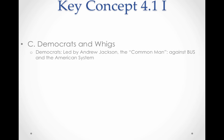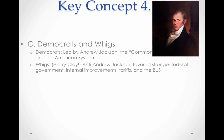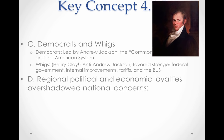Moving to the Democrats and Whigs, which really developed in the 1820s and 1830s: the Democrats were led by Andrew Jackson, seen as the common man, continuing the Jeffersonian tradition. They were against the bank and Henry Clay's American System, which focused on the Bank of the United States, internal improvements, and tariffs. On the other side, the Whigs were led by Henry Clay. They developed largely because they were anti-Andrew Jackson and favored a stronger federal government, internal improvements, tariffs, and the Bank of the United States.